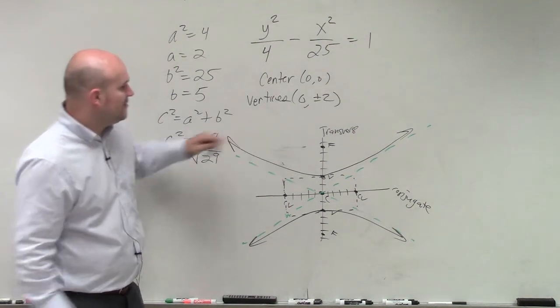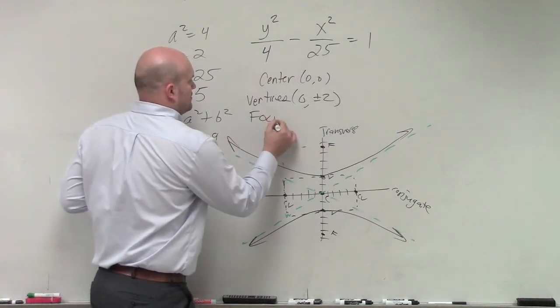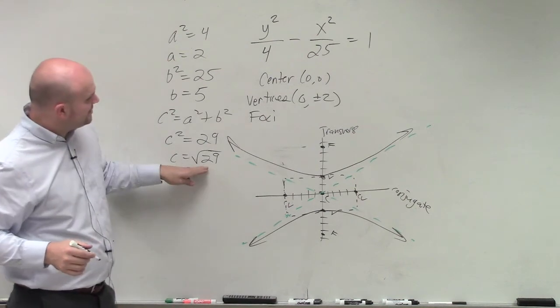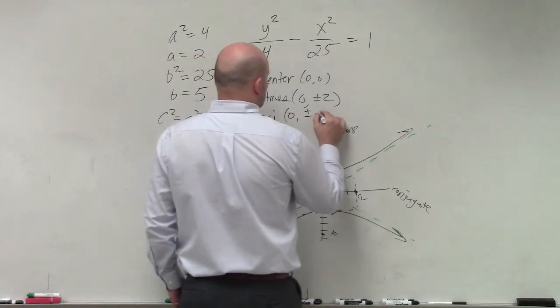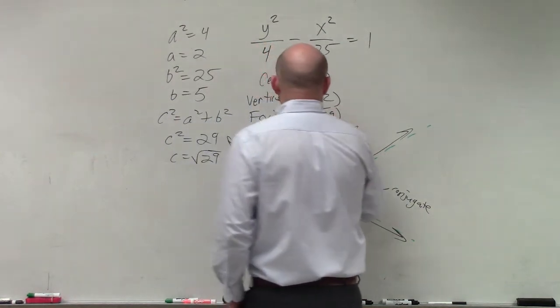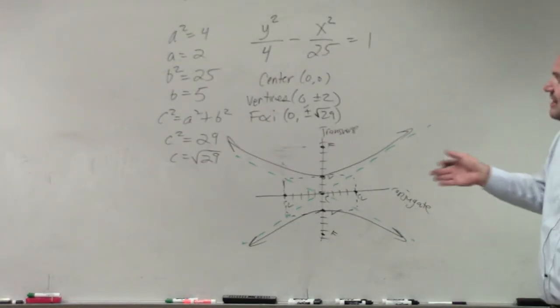For my foci, I'm doing the same thing, but I'm going plus or minus square root of 29. 0, plus or minus square root 29. I didn't ask you for your co-vertices, but that would be plus or minus 5, 0.